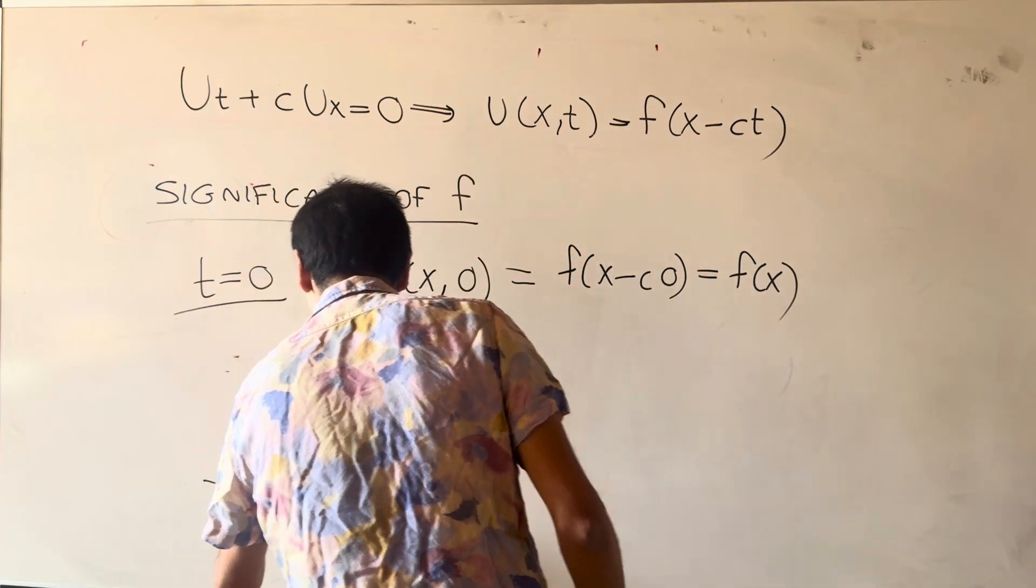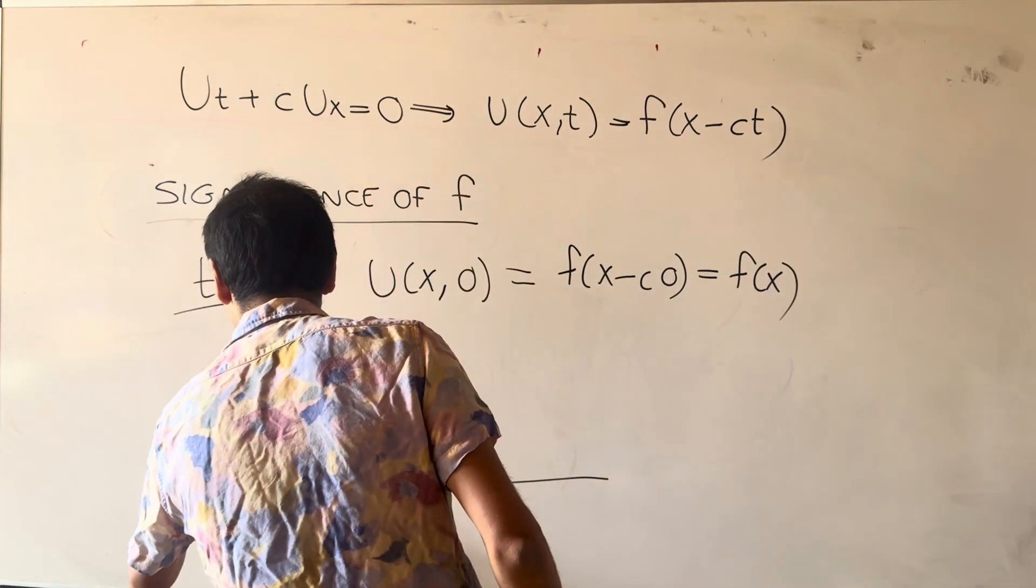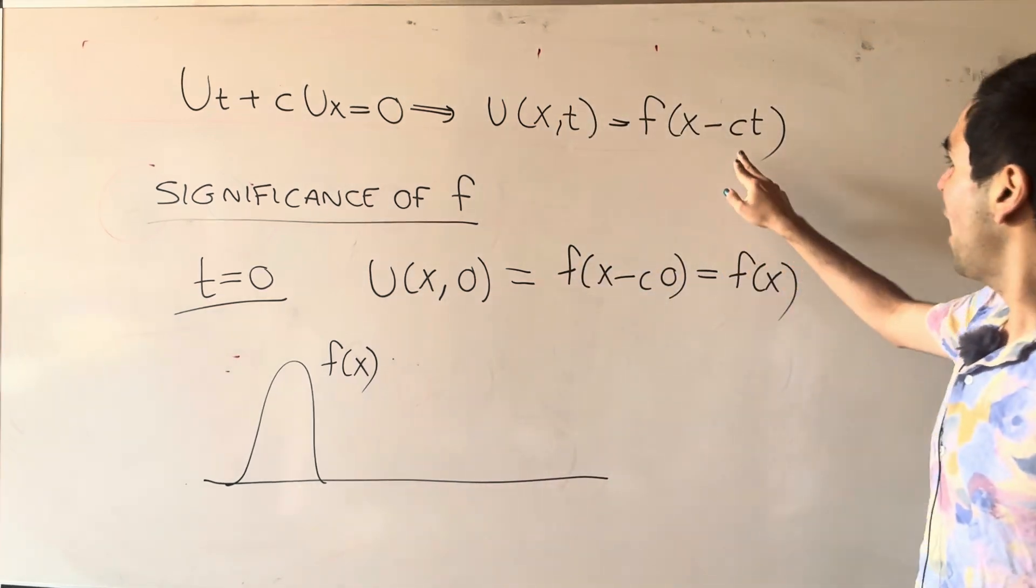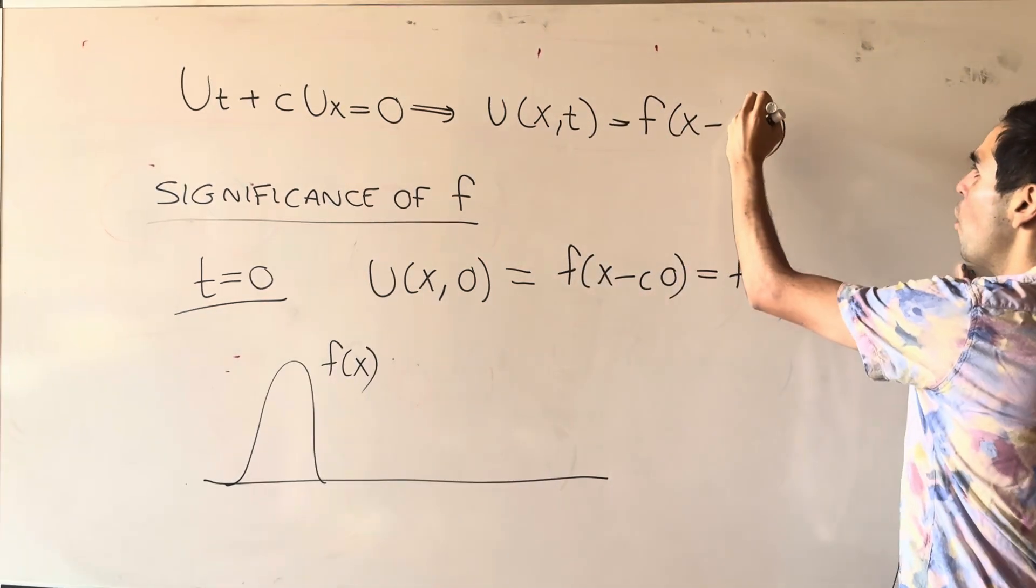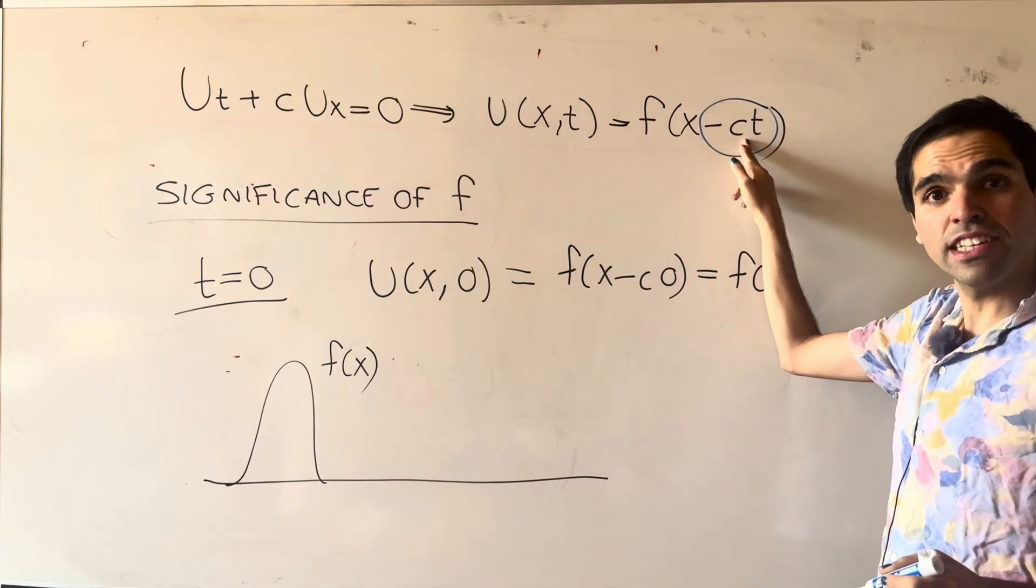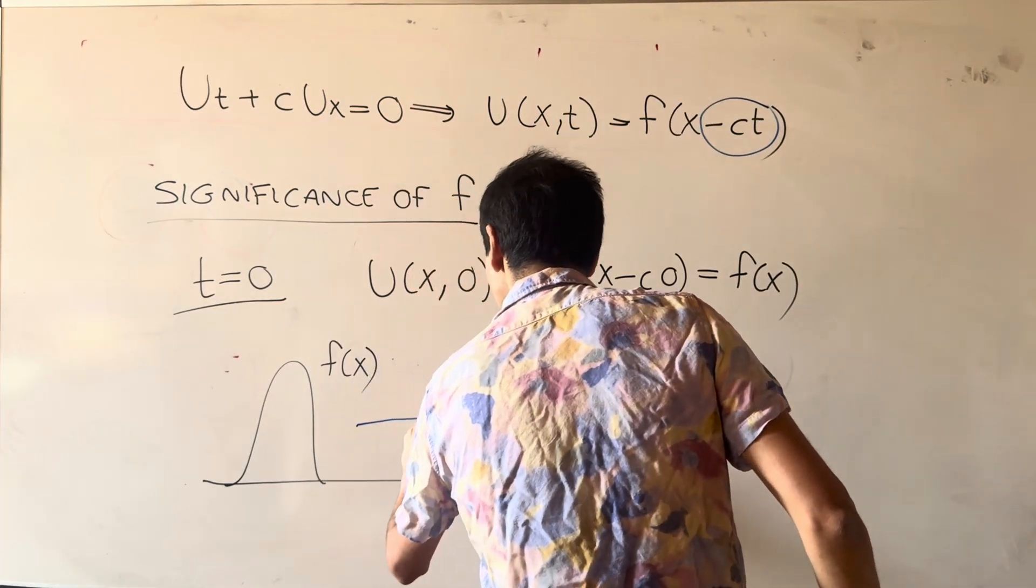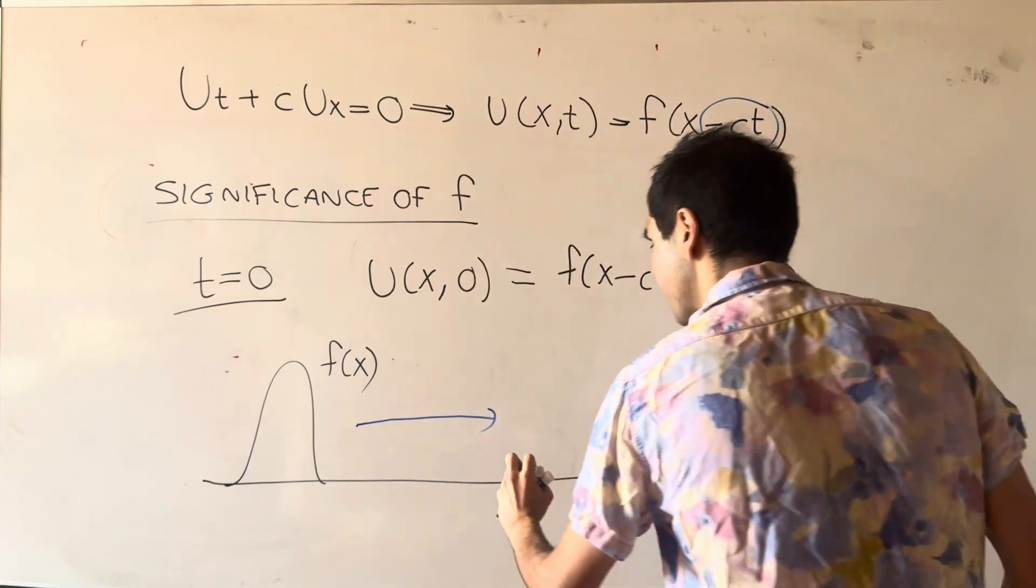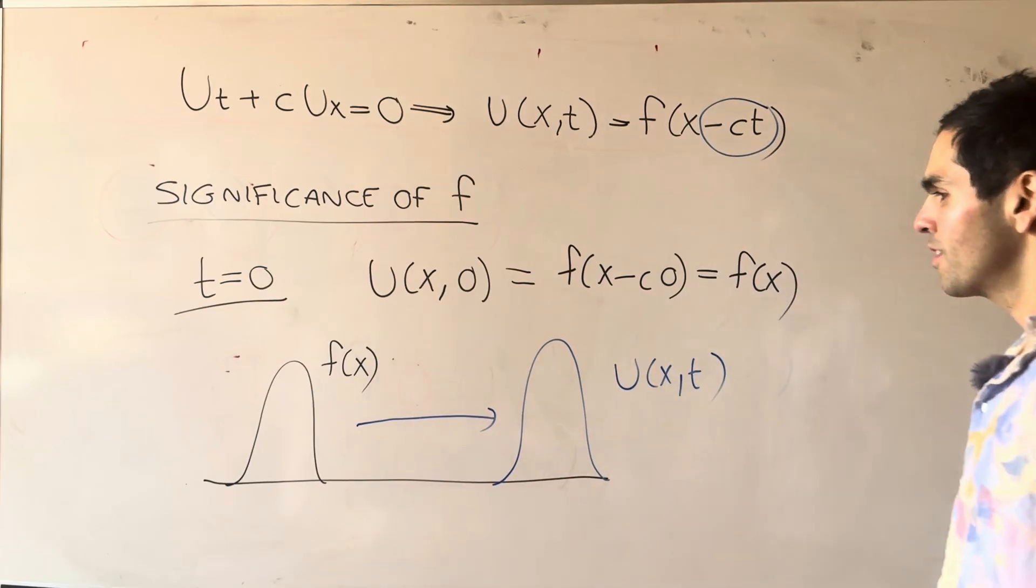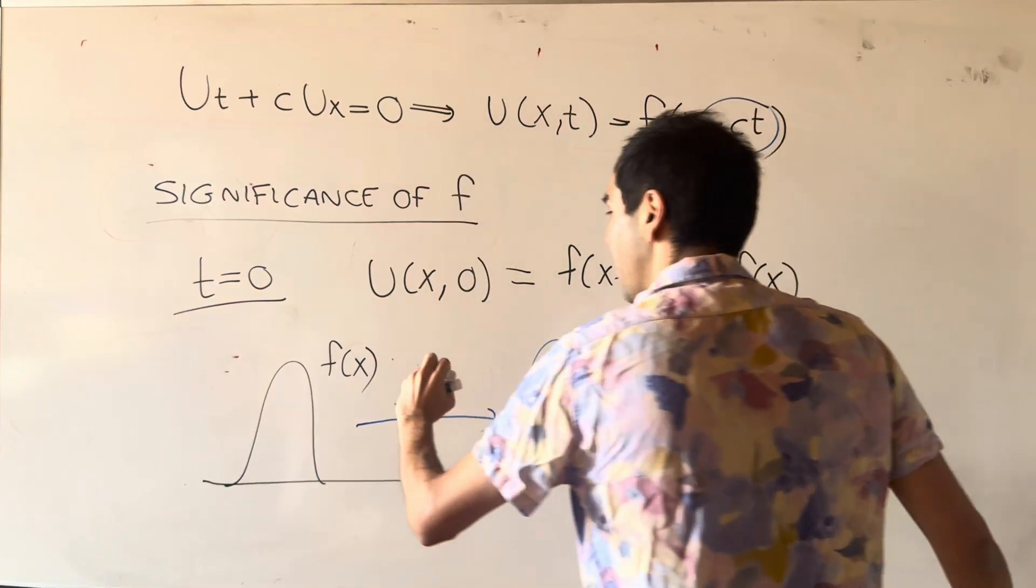And so in particular, what is this equation saying? It's quite interesting. You start with the initial condition f, that's f of x. And then geometrically, what is happening? Well, if you do f of x minus ct, it just shifts it to the right by ct units. So if you shift f to the right by ct units, you get precisely our density u of xt. And this is really what is meant by shift to the right at speed c.